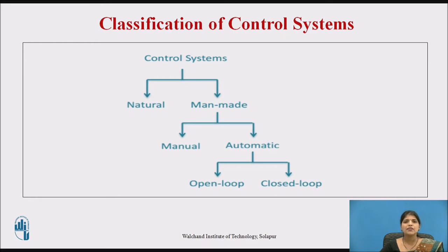According to the classification of control systems, it is divided into natural and manmade. Manmade is further divided into manual and automatic control systems. Open loop and closed loop control systems are the types of automatic control system. In this session we will concentrate on open loop and closed loop control systems with examples.